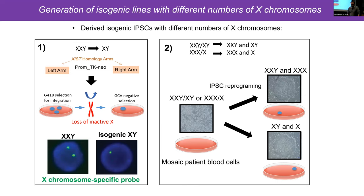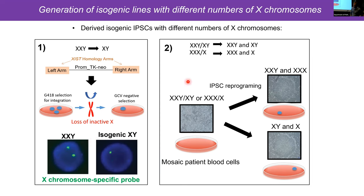Gala Filipova in our lab generated isogenic iPSCs from individuals with different numbers of sex chromosomes using two methods. The first method — from David Russell's lab — involved inserting an XIST-specific TK neocassette, selecting for integration, then using negative selection so cells that survived had lost an X chromosome. When cloned, you end up with cells that are XXY and XY from the same individual — hence the isogenic nature. The second method was simply cloning cells with different genotypes from naturally mosaic patients.